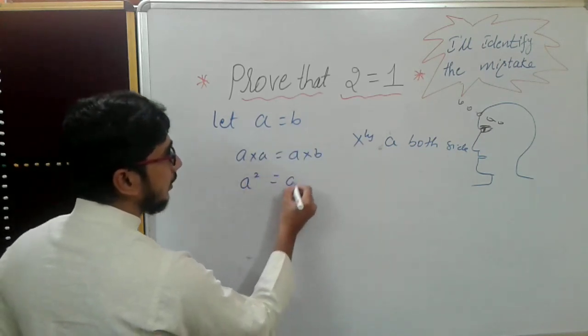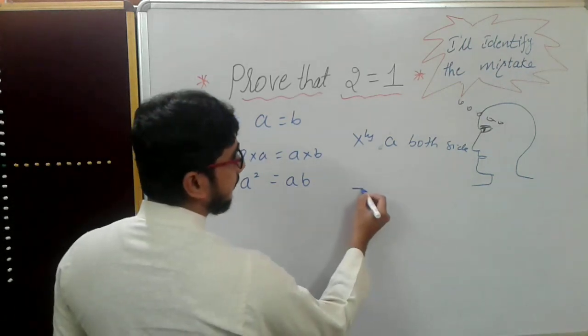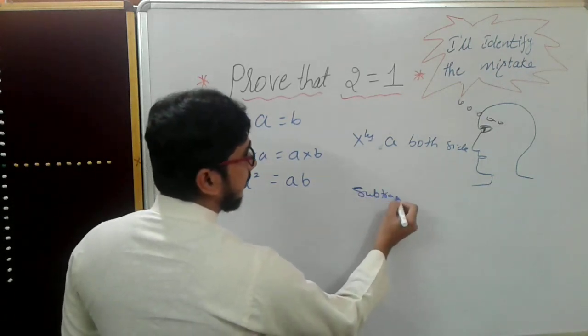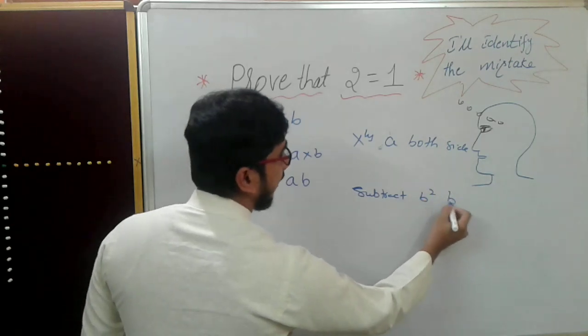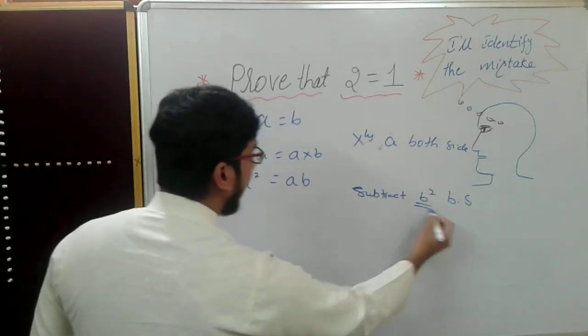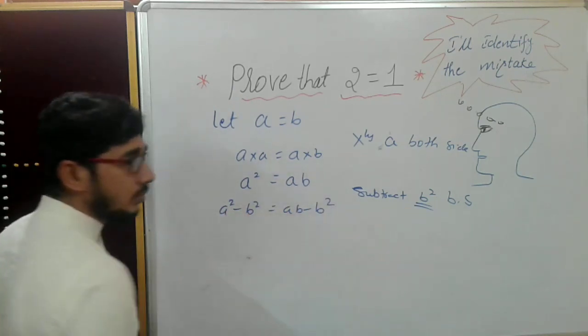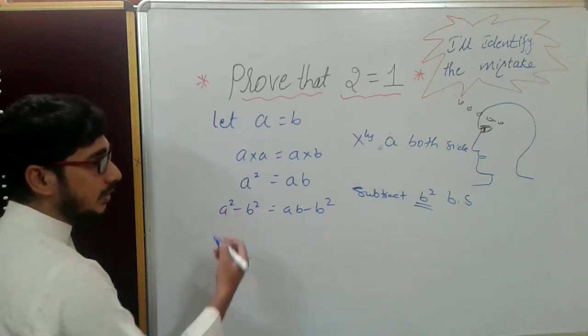So a times a is a², which is equal to ab. Now subtract b² from both sides. So what will happen? a² - b² which is equal to ab - b². This is the formula: a² - b² which is nothing but (a+b)(a-b).